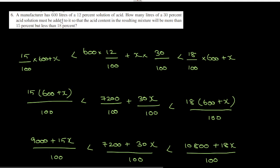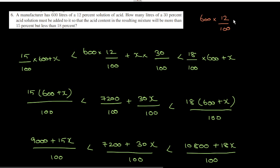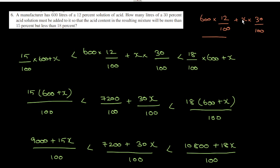So firstly, we have 600 litres of 12% solution of acid. We need to find how much of a 30% solution of acid must be added. So let x litres of 30% acid solution be added.